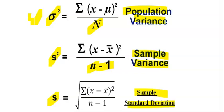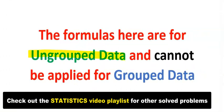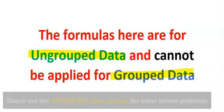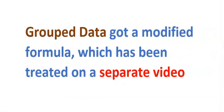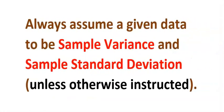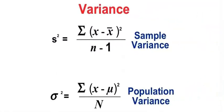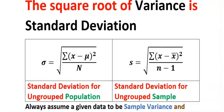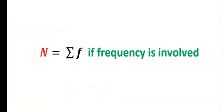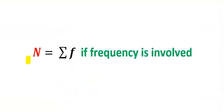These formulas are for ungrouped data only — for grouped data another formula is applied, which has been treated in another video. Another thing to consider: always assume a given data to be sample variance and sample standard deviation unless otherwise instructed. Just keep it simple: the square root of variance is standard deviation — this applies to both population and sample. If frequency is involved, capital N becomes the summation of frequency.